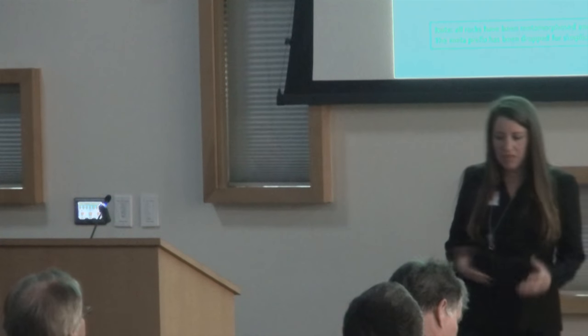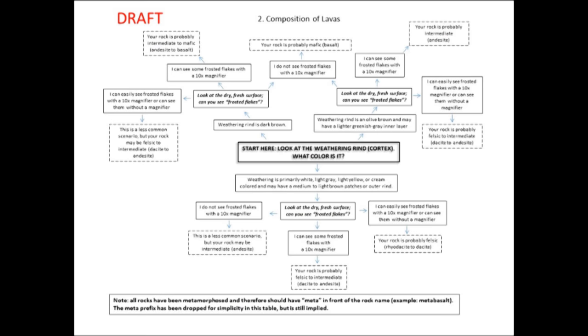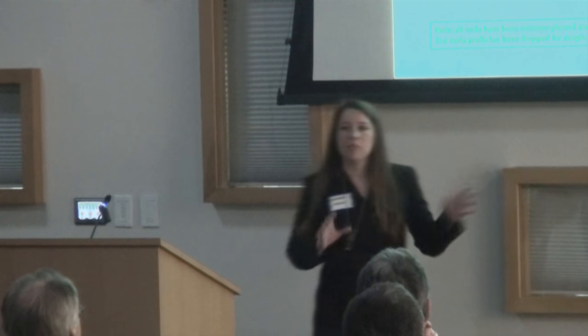After going through the entire first flowchart, you may end up with something very specific — like a hyaloclastic flow-banded lava — or something more general, like a tuff or a lava. If lava is one of your options, you go to the second flowchart, because lavas are characterized by composition. In that flowchart you start in the middle, and the first question concerns the weathering rind, which reflects composition: is it a dark brown, a drab olive brown (may or may not have a lighter interior), or a light cream/white/gray-white that can have medium brown patches?